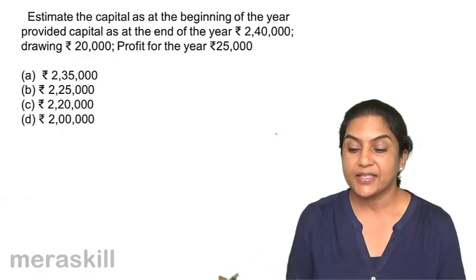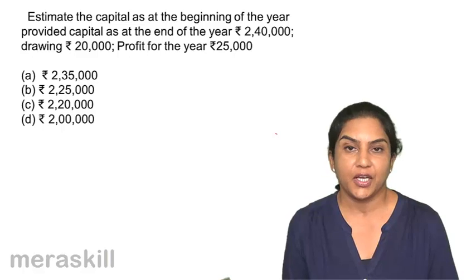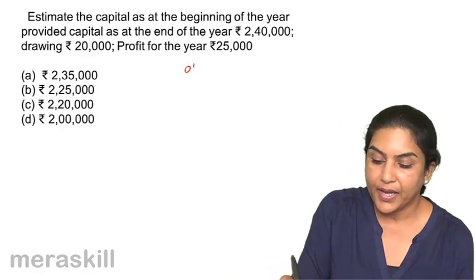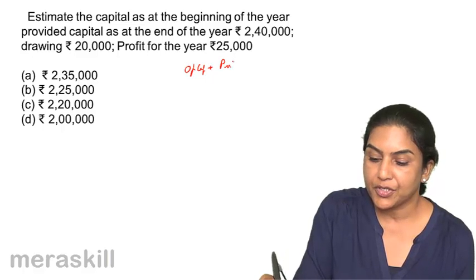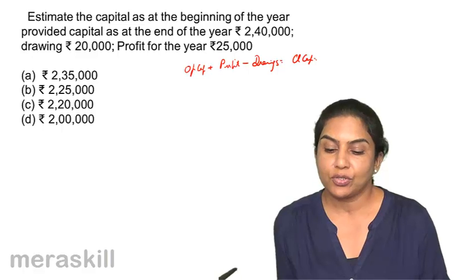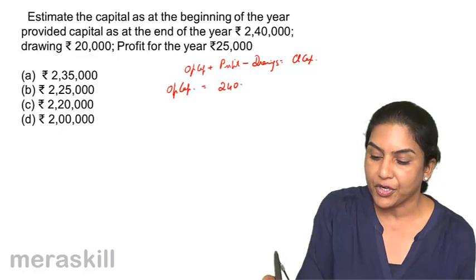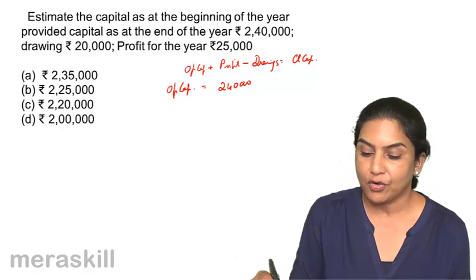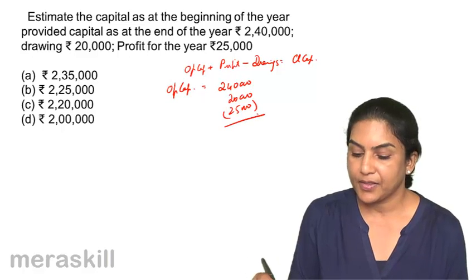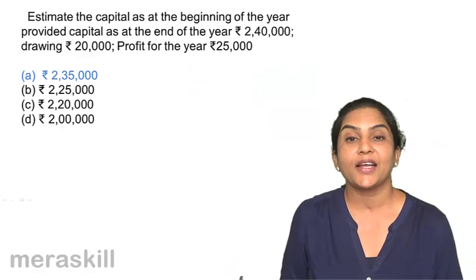Estimate the capital at the beginning of the year, provided capital at the end of the year is 2,40,000, drawings were 20,000, and profit for the year 25,000. Opening capital plus profit minus drawings equals closing capital. Opening capital equals closing capital of 2,40,000, plus drawings of 20,000, minus profit of 25,000 — that is 2,35,000. Correct answer should be A, 2,35,000.